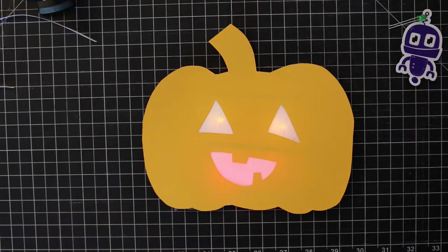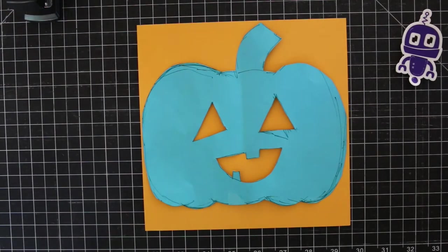Today we're going to learn how to make a light up jack-o-lantern with paper circuits. So we're going to start by drawing and cutting out our pumpkin.